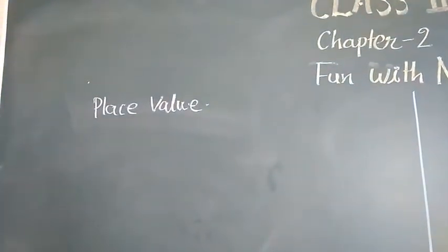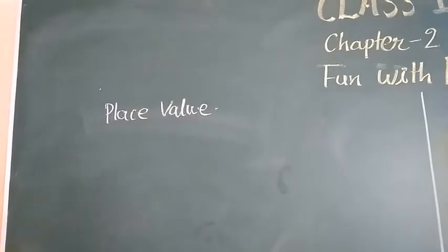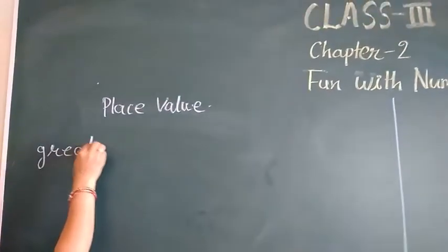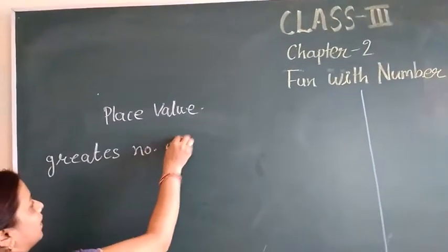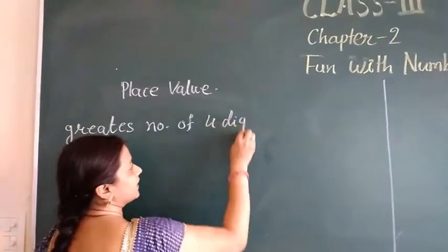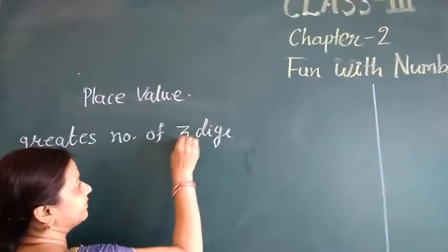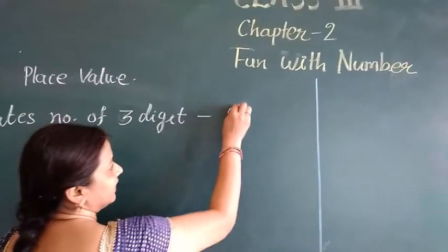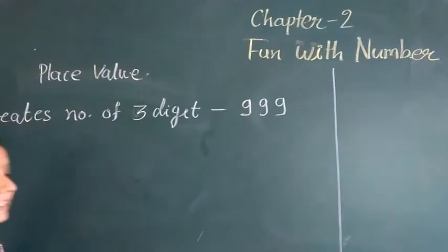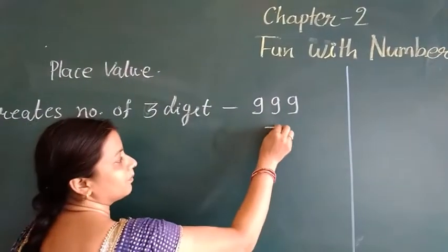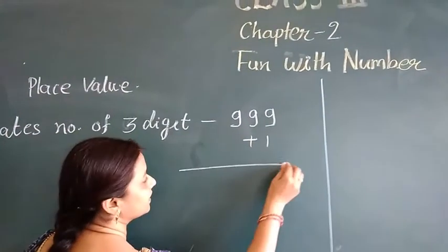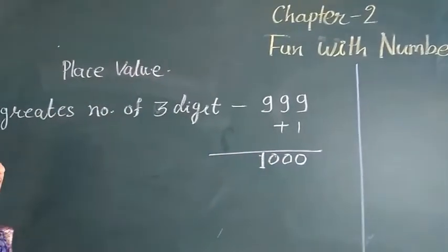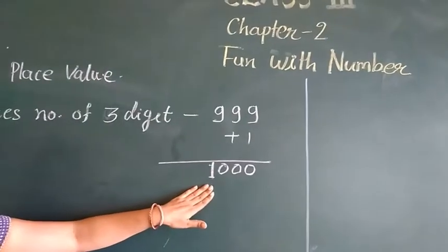In this class, we continue with place value with 4-digit numbers. The greatest number of 3 digits is 999. Now, if we add 1 to this number, we find out 1,000. Look — 1,000 is a 4-digit number.